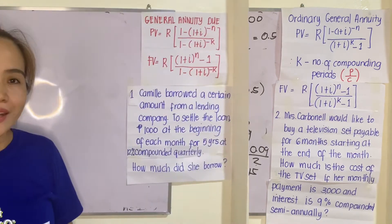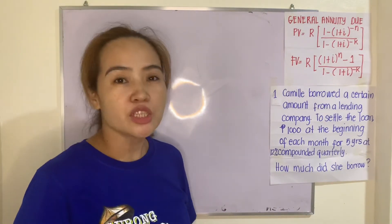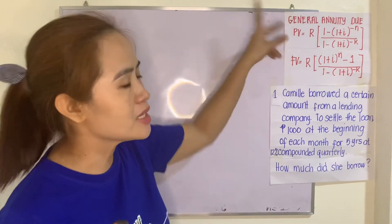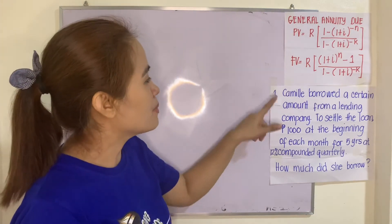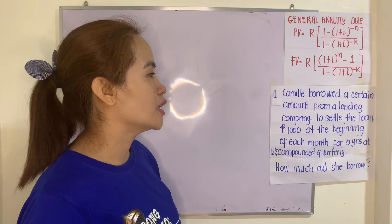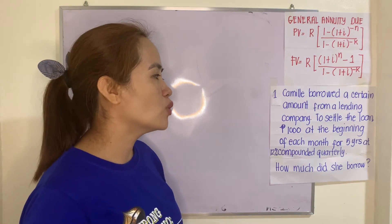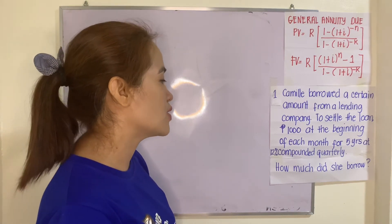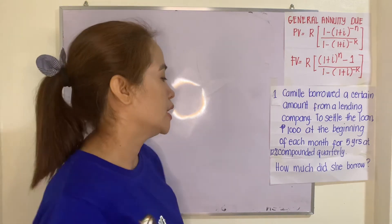Let us go now to General Annuity Due. These are the two formulas — just take note of these. Example 1: Camille borrowed a certain amount from a lending company to settle the loan at 1,000 at the beginning of each month for 5 years at 12% compounded quarterly.